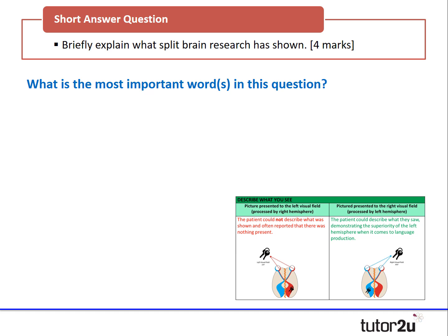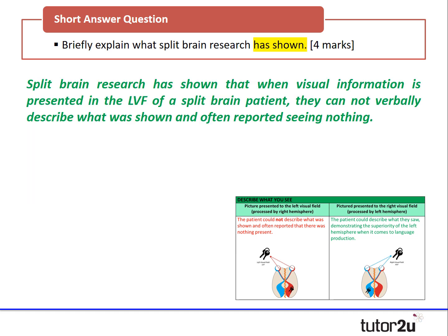Let's look at question one: briefly explain what split-brain research has shown, for four marks. The key words here are 'has shown', which indicates you're talking about the results or findings and the conclusion. A model answer might start like this: split-brain research has shown that when visual information is presented to the left visual field of a split-brain patient, they cannot verbally describe what was shown and often report seeing nothing.